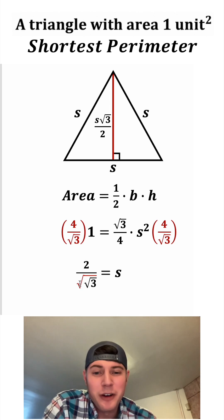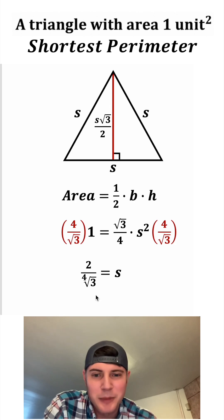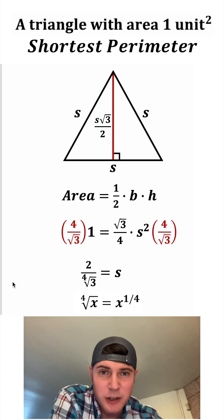And square root of four is two. If you ever do the square root of the square root of something, it ends up being the fourth root of that something. So this bottom changes into fourth root of three.